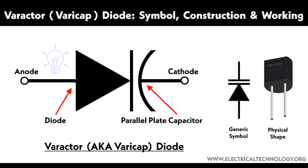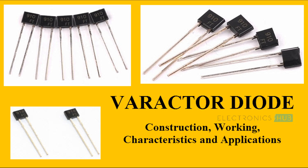Automatic frequency control (AFC): Varactor diodes automatically adjust the local oscillator frequency to maintain a stable frequency output, and are common in radio receivers to stabilize the frequency against drift. Parametric amplifiers: Varactor diodes provide gain by varying their capacitance in synchrony with an input signal, and are used in low-noise microwave amplifiers.